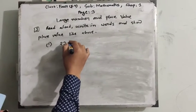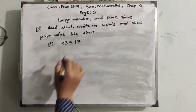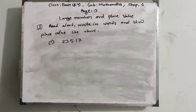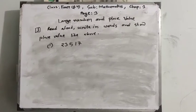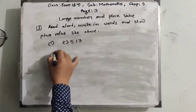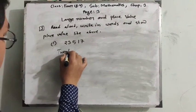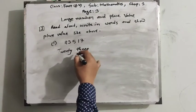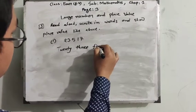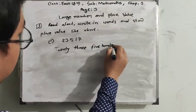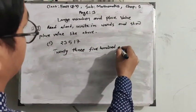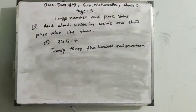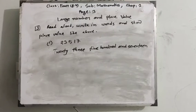The number is twenty-three thousand five hundred seventy. First, how we have to read it aloud: this is twenty-three thousand five hundred seventy. Now writing in words: twenty-three thousand, five hundred and seventy.